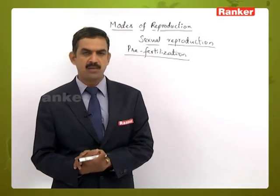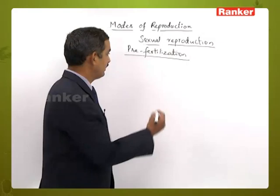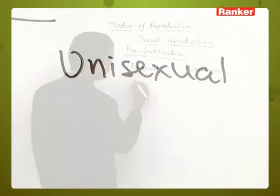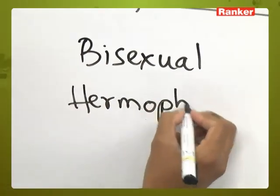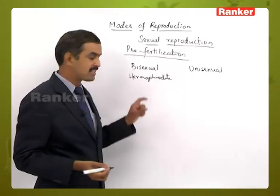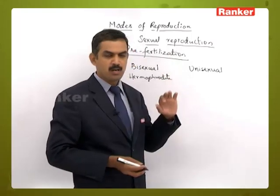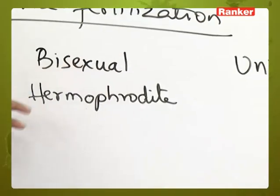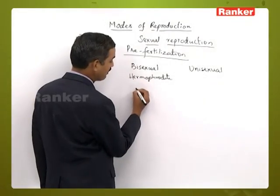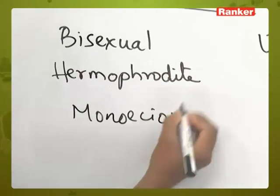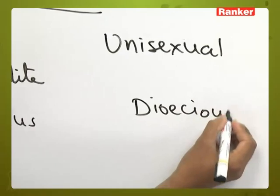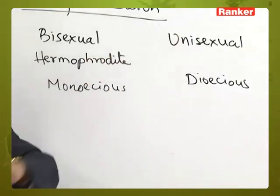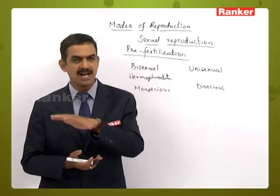Based on the gametes formed, there are two conditions: bisexual and unisexual. Bisexual condition is otherwise called hermaphrodite — both male and female sex organs are present in the same structure. Unisexual means male reproductive structures are present on one structure and female on another. Bisexual condition equals monoecious condition, whereas unisexual condition equals dioecious. In higher plants, monoecious means both sex organs are present on the same plant, while dioecious means one plant has only male sex organs and the other has only female sex organs.